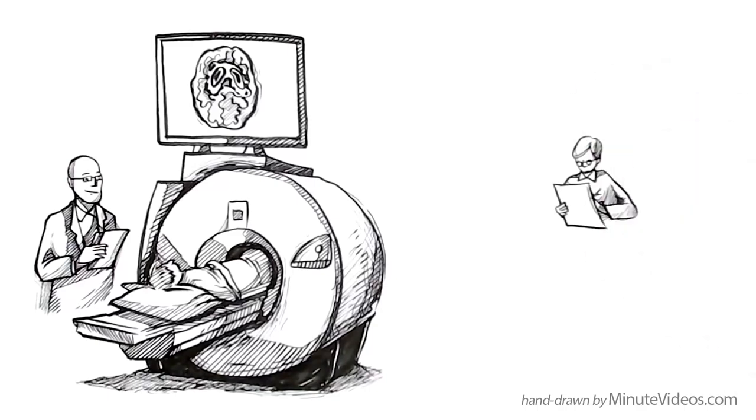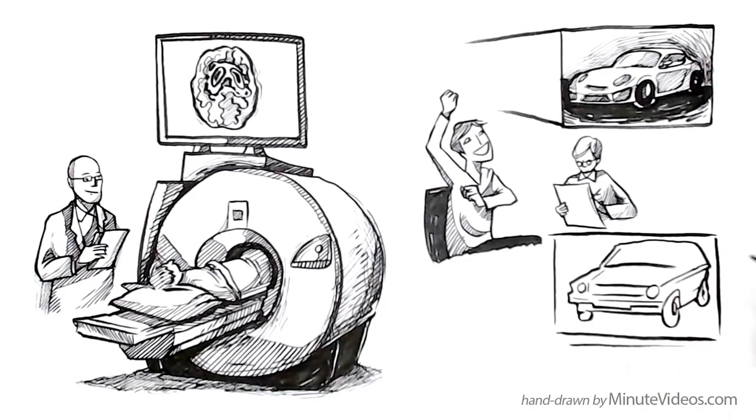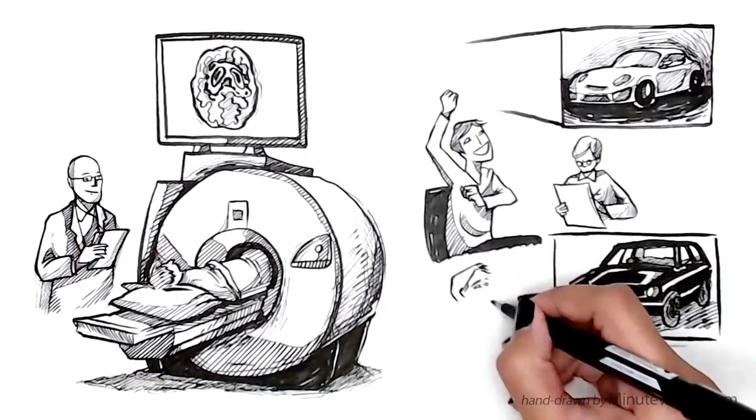German scientists did the same experiment with young men and pictures of Porsche cars, which caused the same area to light up. When they did it with pictures of a Daihatsu, it didn't.